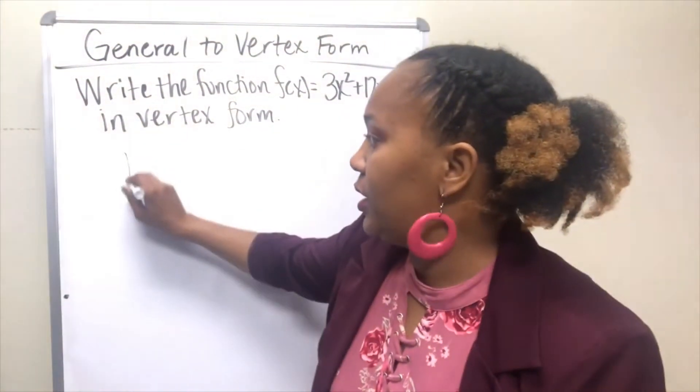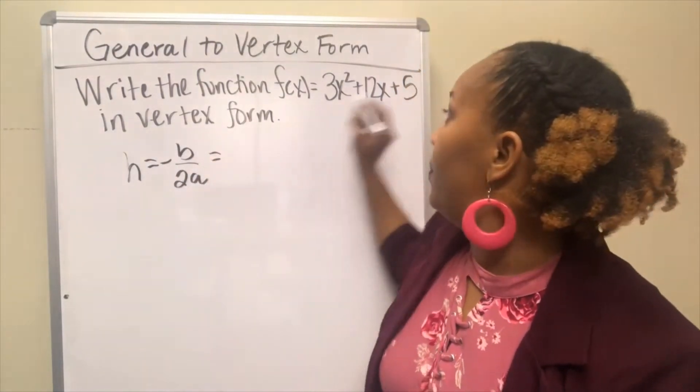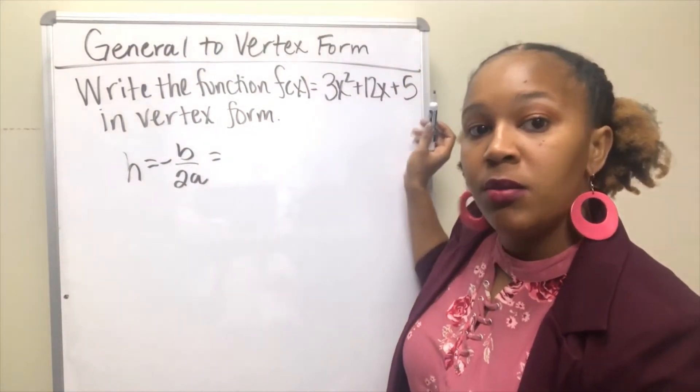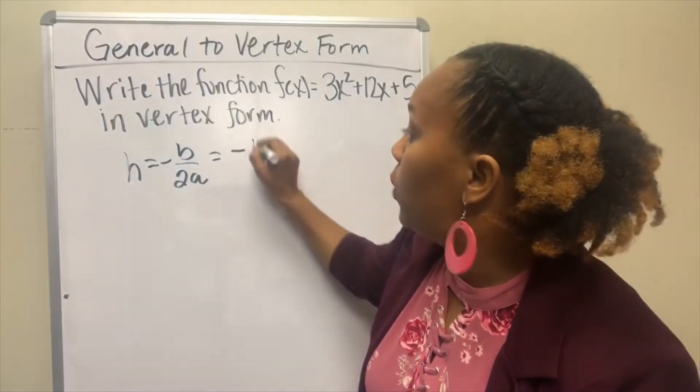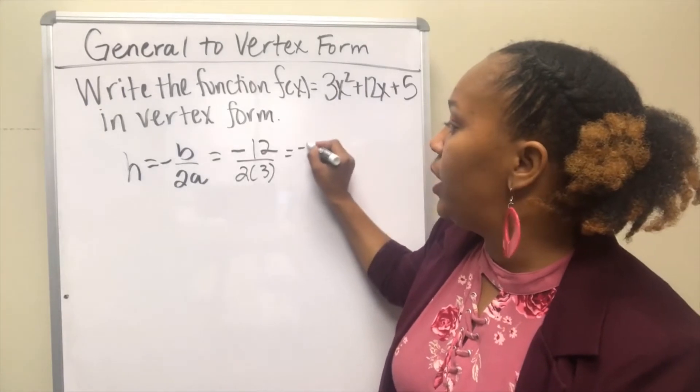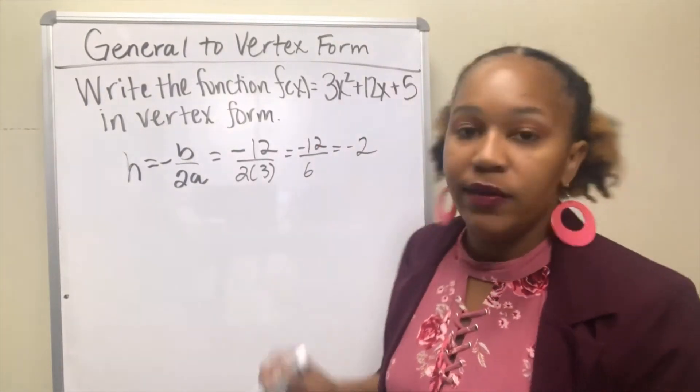The vertex formula says that h is equal to negative b over 2a. In this case our b is 12. Remember this is ax² + bx + c. Our b is 12 and our a is 3. And so we get negative 12 over 6, which is equal to negative 2.